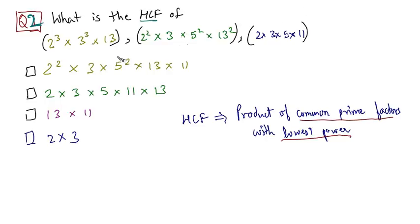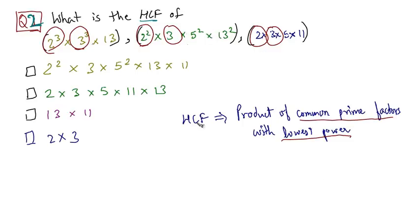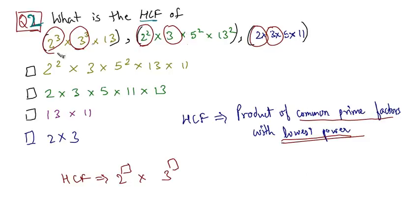Let's find the factors that are common to all three numbers. In the first term we have 2, and it is common to all three numbers. The next common factor is 3, which is present in all three numbers. 13, 5, and 11 are not common factors. So HCF is the product of common prime factors — we have HCF equal to 2 into 3. But we are yet to give them their powers. The HCF is the product of common prime factors with the lowest power. What is the lowest power of 2 amongst all of these 2's? The lowest power of 2 is 1.